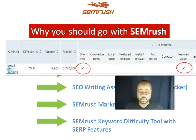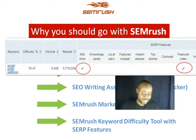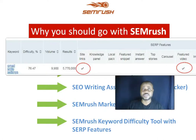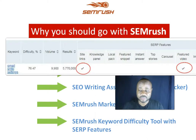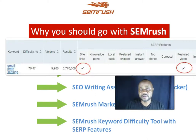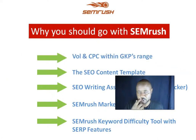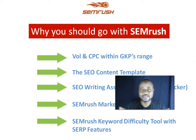Another reason we chose SEMrush is that the keyword difficulty tool comes with SERP feature data. It tells you which SERP features are available for the keyword you are targeting — features like sitelinks, featured snippets, and featured videos. SEMrush is our tool of choice.